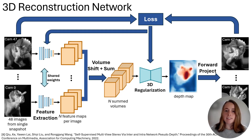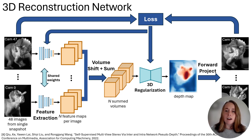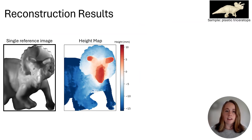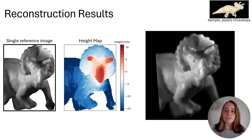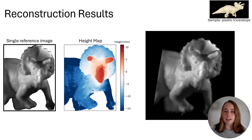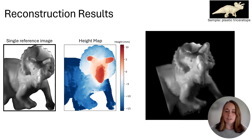Of course, what we really want is to be able to generate a dense height map or volumetric reconstruction for our sample. To achieve that, we're using a self-supervised machine learning approach adapted from a previously published paper. Because the algorithm is self-supervised, we are able to perform the 3D reconstruction for new samples even without previous training data. Here are the results of running that algorithm on the images of the triceratops. While not yet perfect, we can clearly see the 3D structure of the dinosaur, which we can also display as a point cloud or any other 3D visualization.